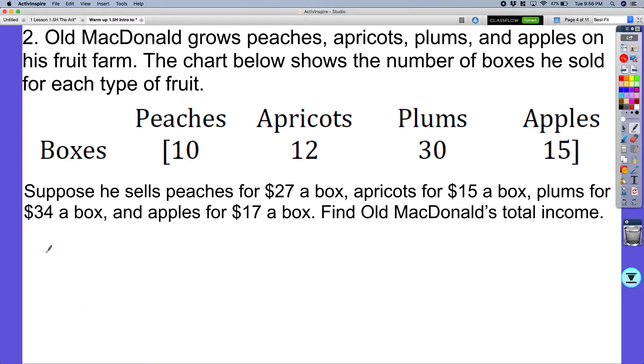So that means I'm going to have the cost of peaches, the cost of apricots, the cost of plums, and then the cost of apples. So let's see, the cost of all those would be 27, 15, 34, and 17 a box. And then I have my other matrix.